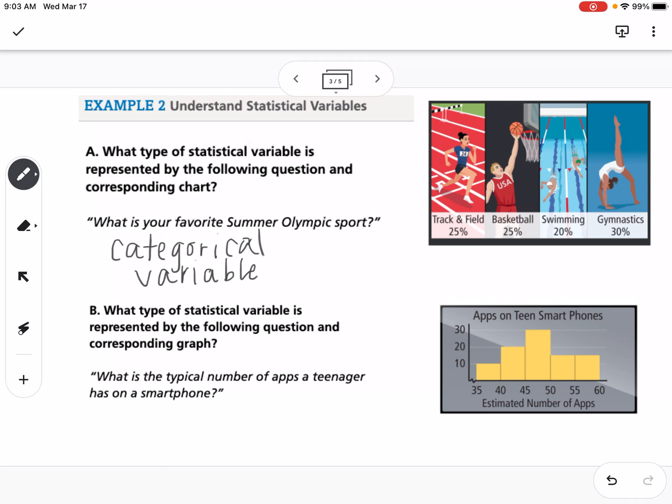Our second example asks what type of statistic variable is represented by the question what is the typical number of apps a teenager has on a smartphone? If you think about the answers, you're going to get answers as numbers, numerical data. If you're getting answers as a number, then we call that a quantitative variable. So those are the two different types of statistical variables.